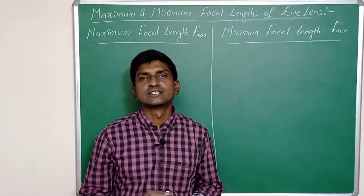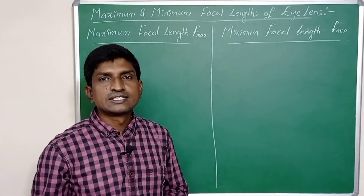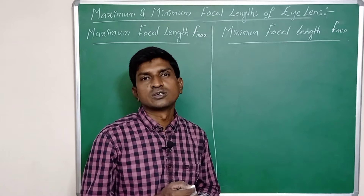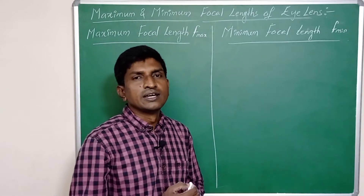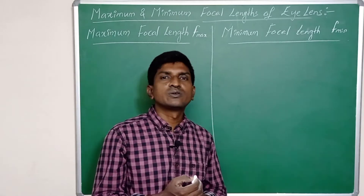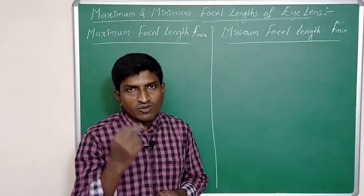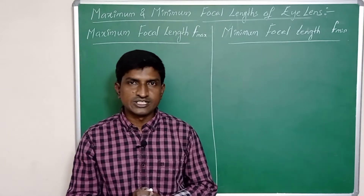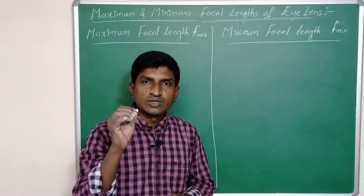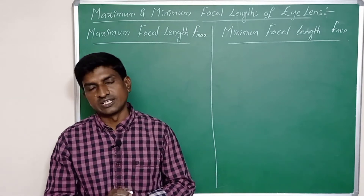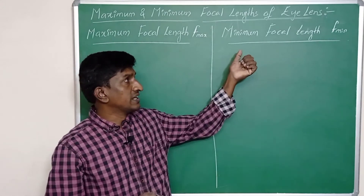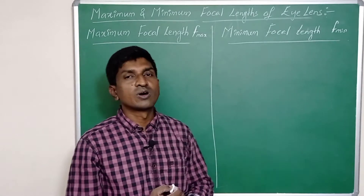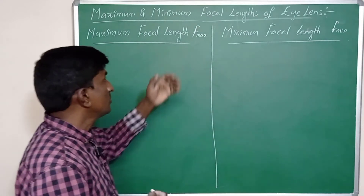If the object is at infinite distance then the eye lens gets maximum focal length. Similarly, whenever the object is close to our eye lens, generally the least distance — the minimum distance required to observe an object clearly from our eye — is 25 centimeters. This is called the least distance of distinct vision. If we keep the object at that point, 25 centimeters, then our eye lens gets the minimum focal length.